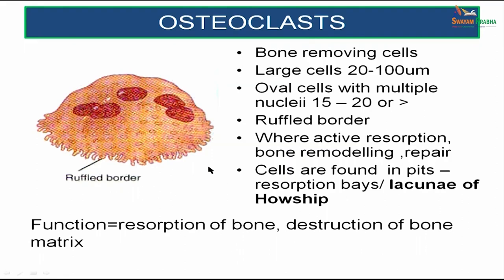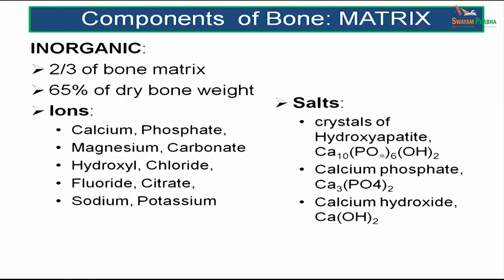The inorganic part constitutes two-thirds of the bone matrix, or 65 percent of dry bone weight. It is made up of ions and salts. Ions include calcium, phosphate, magnesium, carbonate, hydroxyl, chloride, fluoride, citrate, sodium, and potassium. The salts are hydroxyapatite, calcium phosphate, and calcium hydroxide.